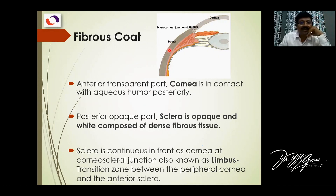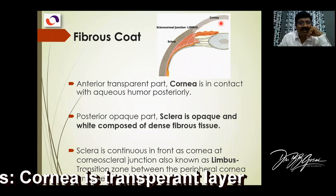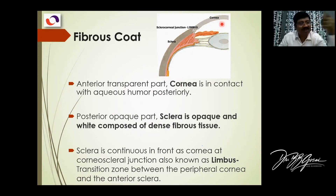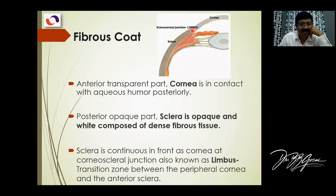The fibrous coat is formed by the sclera and cornea. The cornea is transparent and is in contact with the fluid — the aqueous humor — which is also a refractive medium. Then there is the lens. The cornea is clear, and this part is the sclera, which is white — a dense connective tissue. And this is the sclerocorneal junction, the limbus.